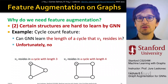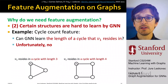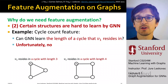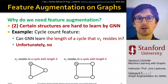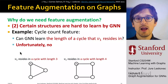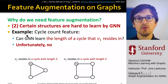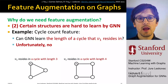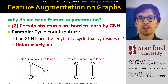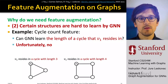Another motivation for feature augmentation is that certain structures are hard to learn for a GNN. Sometimes we actually want to encode a bit of graph structure into the node attribute vector. For example, it is very hard for a GNN to count the length of a cycle a node is on. The question is: could a GNN learn the length of a cycle a given node resides in? Unless you have discriminative node features, this is not possible.